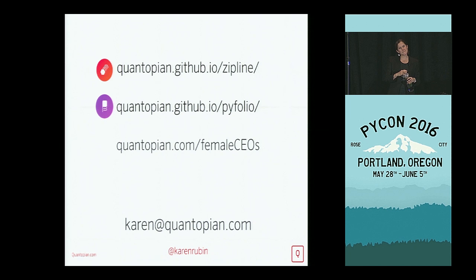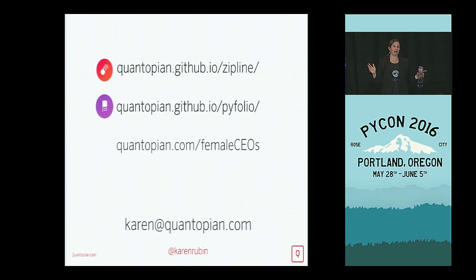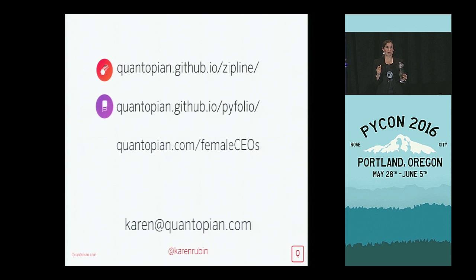Question: The Fortune 500 changes over time, so at the moment of buying those companies were in the Fortune 500 — if they moved out, you wouldn't buy them anymore. Answer: The female CEO version does not take into account that a company might have fallen out of the Fortune 1000. That changes the comparison against the Fortune 1000 benchmark or the Quanto 1000. The Quanto 1000, because the Fortune 1000 changes every year, I rebalance that one annually in June when the new list is announced. But the female CEO holdings could fall out of the Fortune 1000 and remain in my portfolio. That's one reason I like the RSP as the best benchmark — it's just an equal-weighted S&P 500.